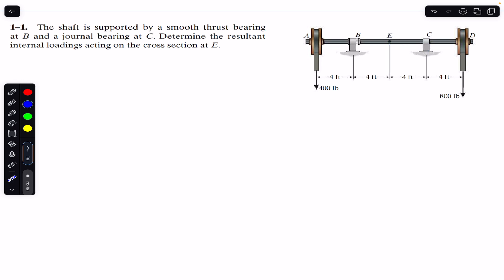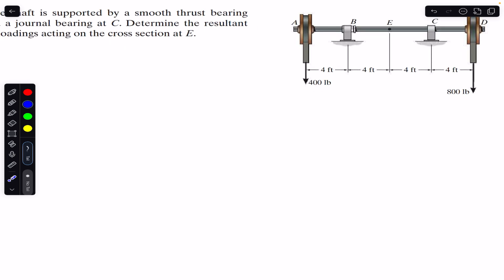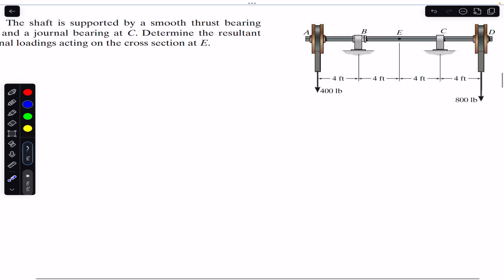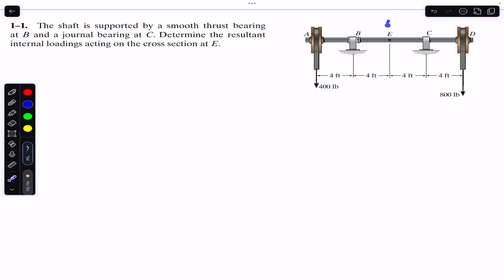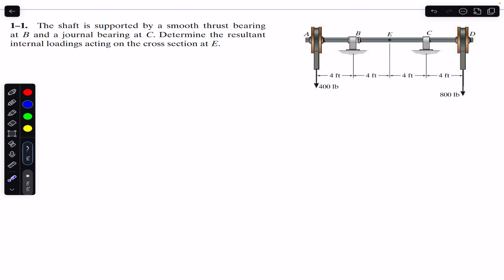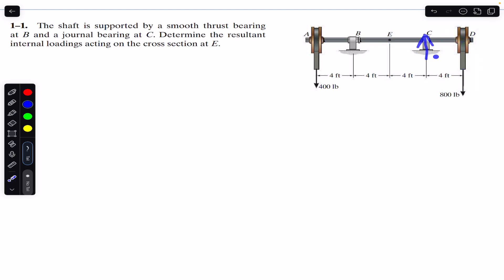We are asked to determine the internal loadings at the cross section of the shaft at point E, which is the midpoint of the whole shaft. To find the internal loadings, we have to cut this shaft at E to expose the cross section. Since we are considering the right side of the cut, we must find the reaction at point C — specifically Cy. To find Cy, we will consider the whole shaft and apply the equilibrium conditions.